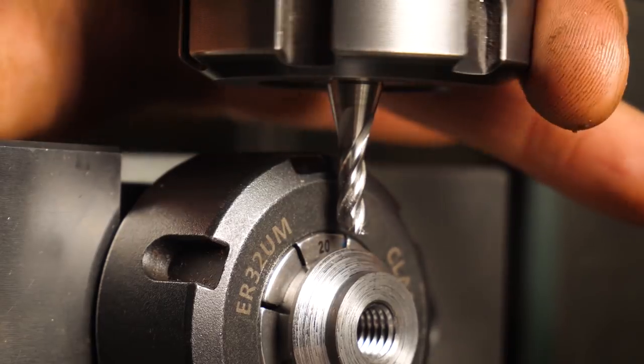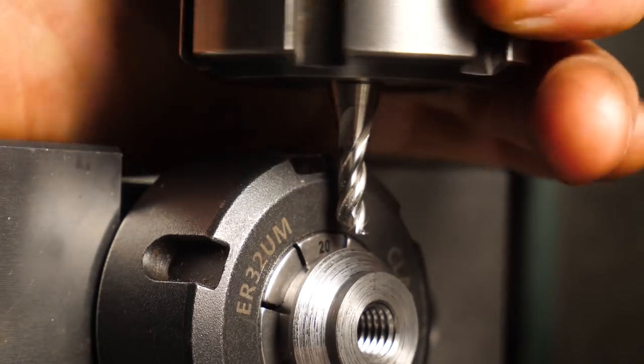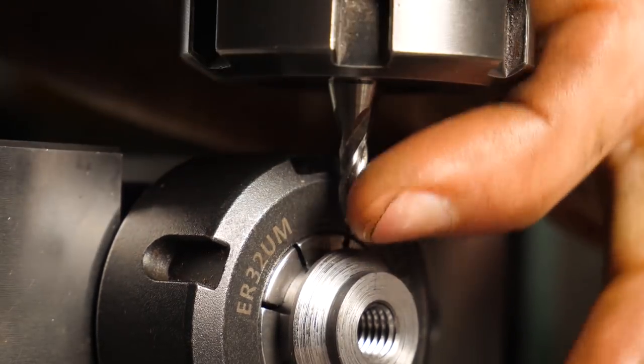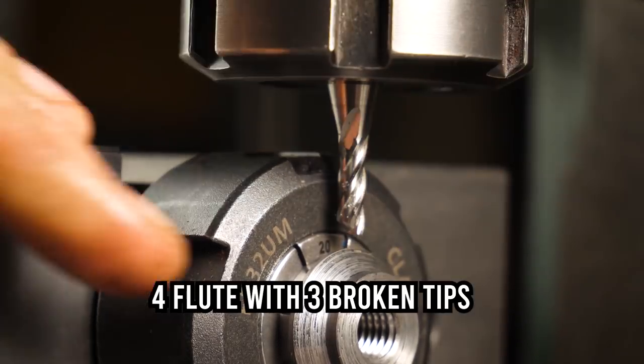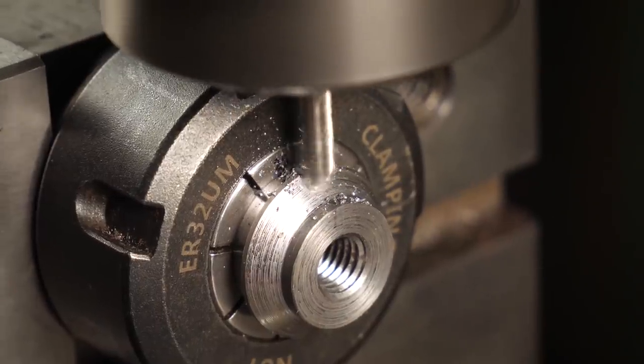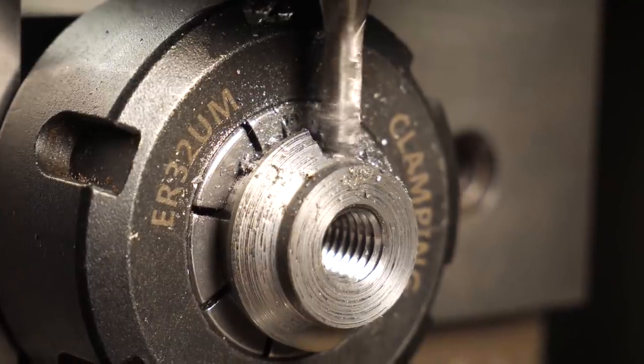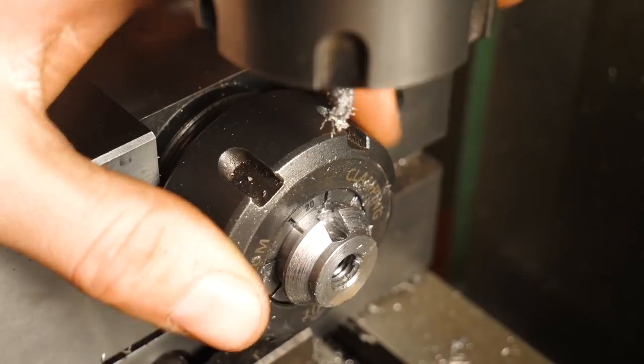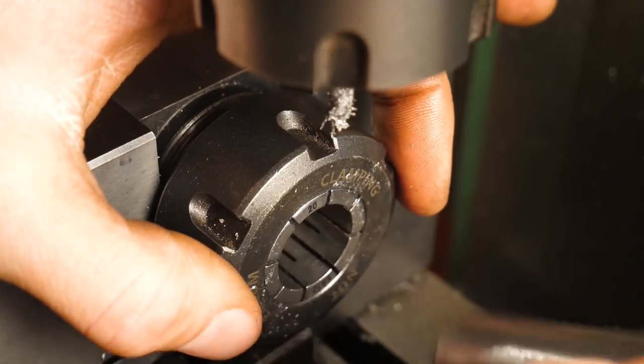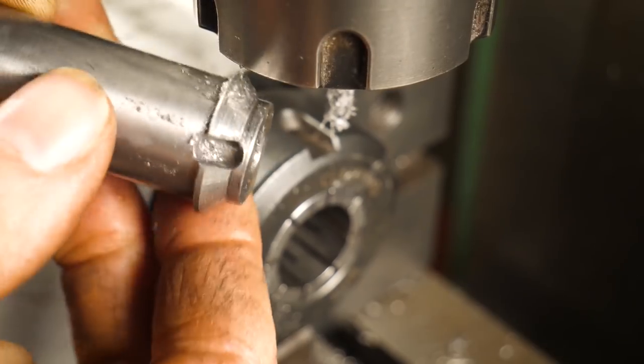So as it turns out, this is my best end mill I've got in this size. And it's a one flute. Let's stubbornly push on. What could go wrong? Due to this end mill being almost destroyed, I'm taking this very slow and easy. I think I'd better order a new end mill. Got the job done.